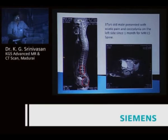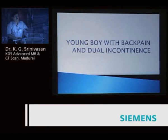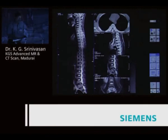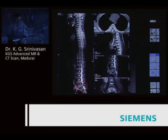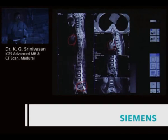Rectal mass with pre-sacral space infiltration, acetabular secondaries, and lymph nodal metastasis — all responsible for the left-side sciatica. Young boy with back pain and bowel incontinence: classical destructive lesion at L5, pathological fracture with bony fragments compressing the roots. Any specific clue? Looking carefully at the mediastinum, it is a proven case of malignant germ cell tumor of the mediastinum with metastasis to L5.